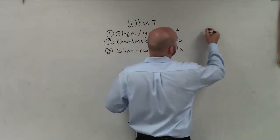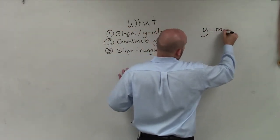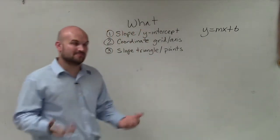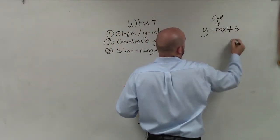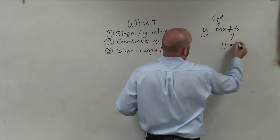First of all, we need to know the slope-intercept form. Slope-intercept form is y equals mx plus b, where m represents our slope, and b represents our y-intercept.